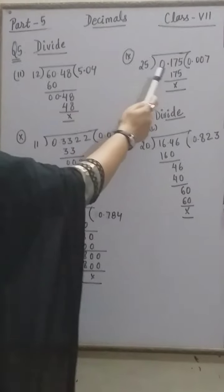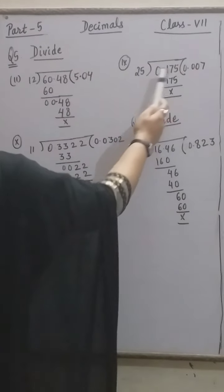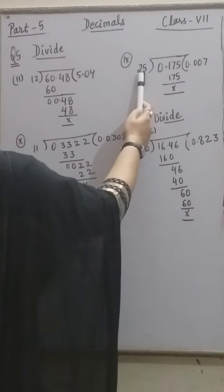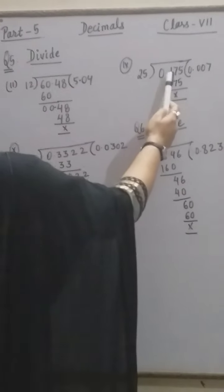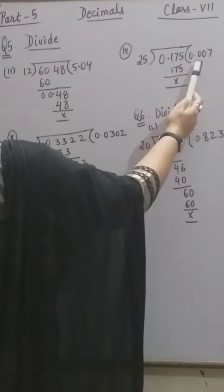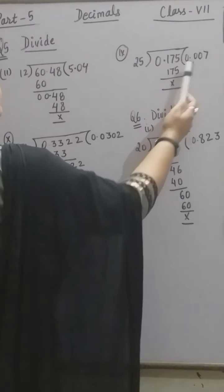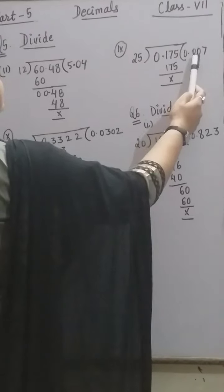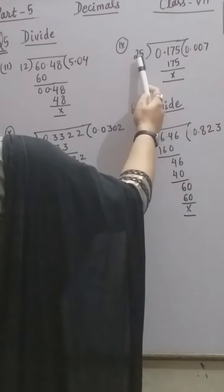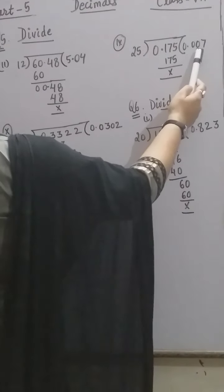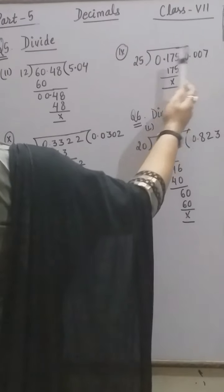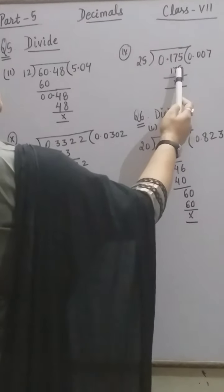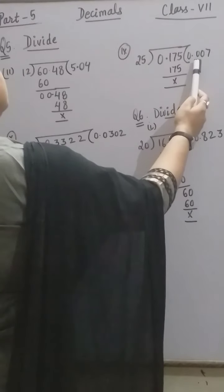9th part: we have to divide 0.175 by 25. Here 0.175 is the dividend and 25 is the divisor. 1 is at the 10th place; as the 10th place is going to participate in the division, we place the decimal point. 1 is less than 25, so place 0. 17 is also less than 25, so we place 0 again. Now we read the table for 175: 25 sevens are 175. So our answer is 0.007.